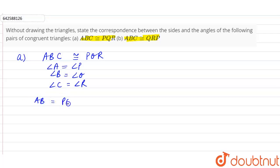so AB is equal to PQ, BC is equal to QR, and AC is equal to PR.